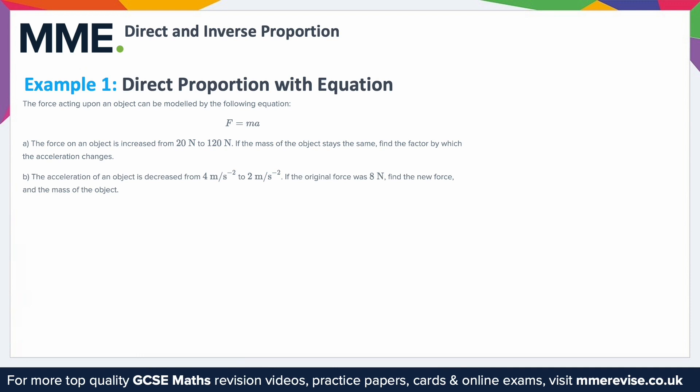This is direct proportion. What that means is as one goes up, the other one goes up. So in this case, if the force has gone up, then one of these must have gone up. But we know mass has stayed the same, so that must mean acceleration has gone up by the same factor.